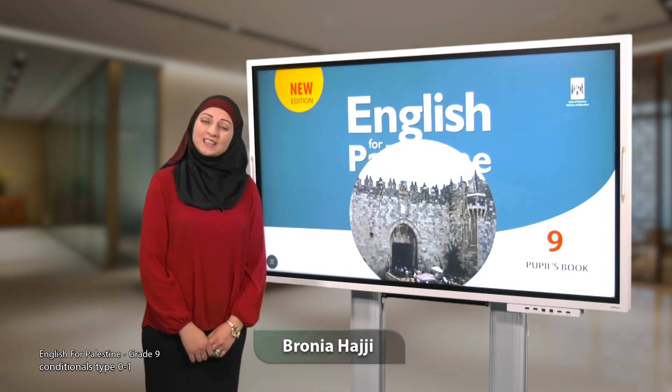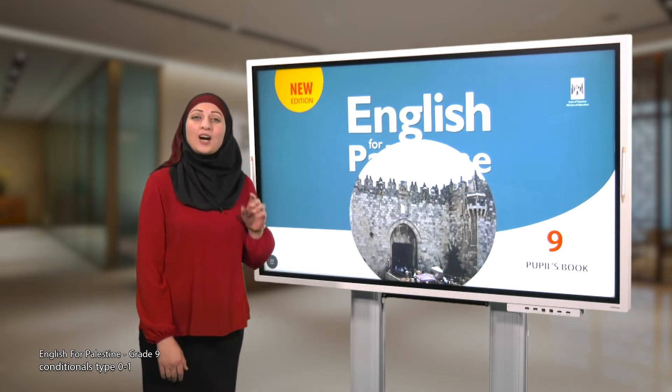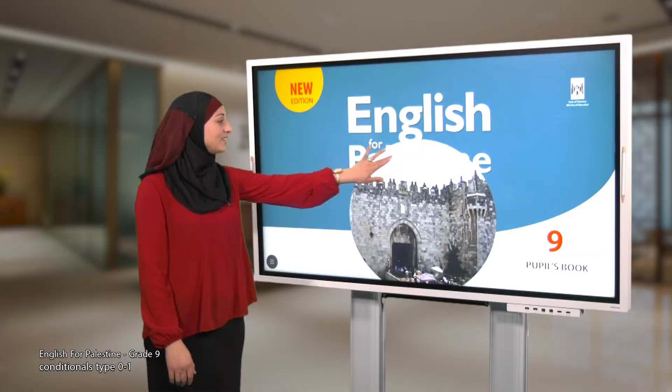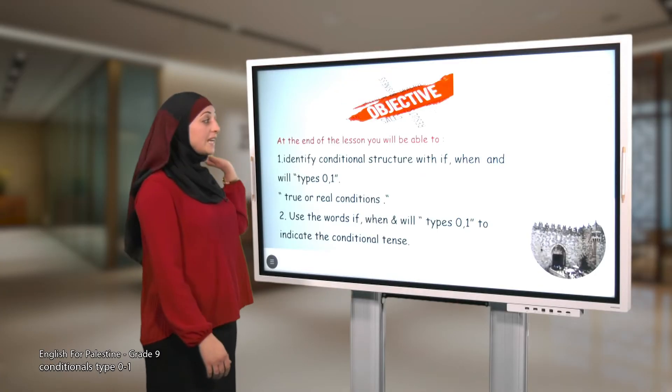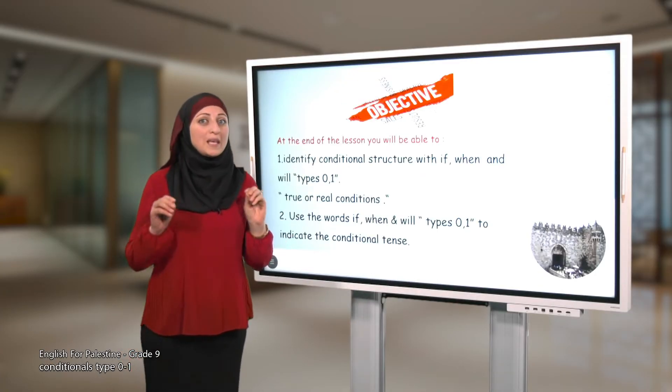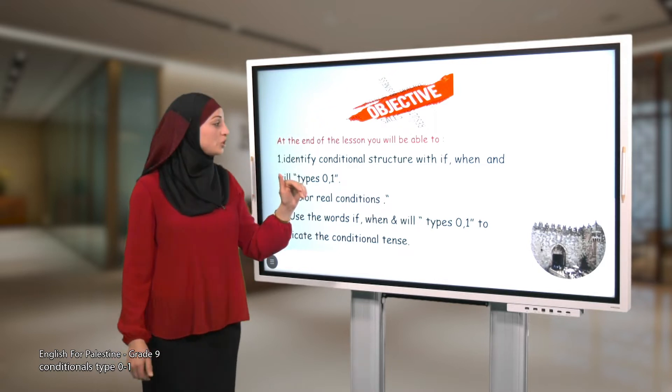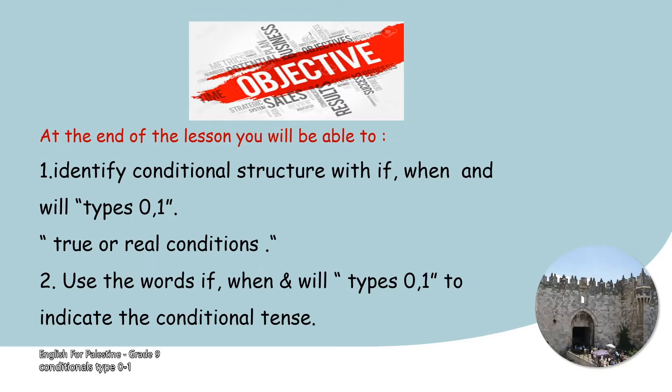How are you my dear students? Today our lesson is about conditionals type 0 and 1, so give me your attention. Let's start. At the end of this lesson you will be able to: number one, identify conditional structure with if, when, and will types 0 and 1; number two, use the words if, when, and will types 0 and 1 to indicate the conditional tense.